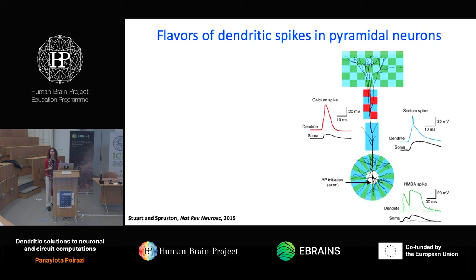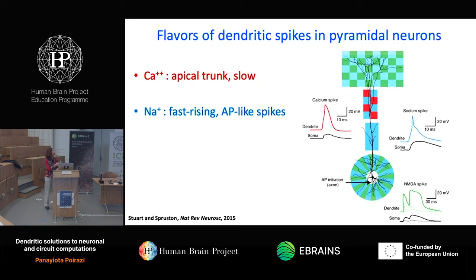In addition to their complicated morphology, they support a large number of nonlinearities, which are important for understanding how they compute. For example, we can have different types of spikes — sodium-dependent spikes that are similar to action potentials taking place in different locations. Wherever you see the blue, that's where we have sodium spikes in cortical neurons, so pretty much everywhere in this case.